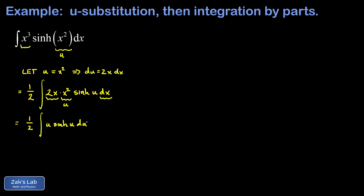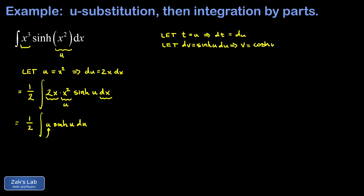This is a classic integration by parts integral. In integration by parts, we choose one piece to differentiate and one piece to integrate. The advantageous choice here is to differentiate u, because that gets simpler. Since we already used the letter u, I'll use t and v instead. Let t equal u, so dt is du. The rest of the integral is sinh u du, so let dv equal sinh u du. That means v is the antiderivative of sinh, which is the hyperbolic cosine function, cosh u.